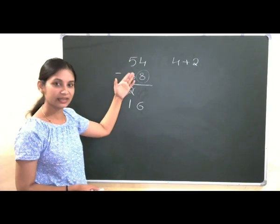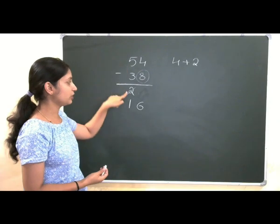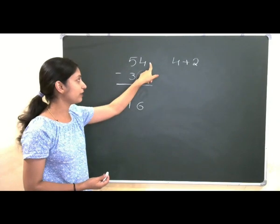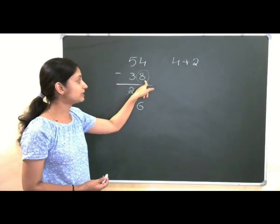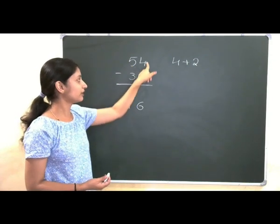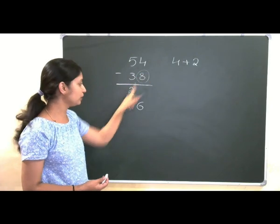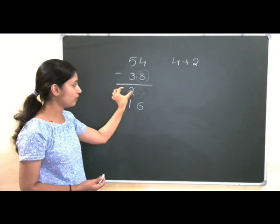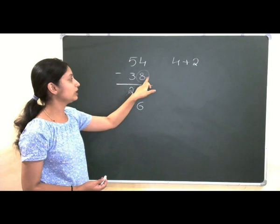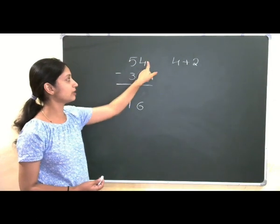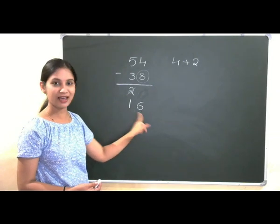I will just repeat once again. If you are used to this method, it will be very easy. 5 minus 3 you will do. You will check whether the above number is more than this number or less than. Yes, you are getting the more number here and lesser number here. You need to decrease 1 number from what you got here. 2 minus 1 gives you 1. Then you need to add the complement of this number to the above number. That is 4 plus 2 gives you 6. 16 is the answer.